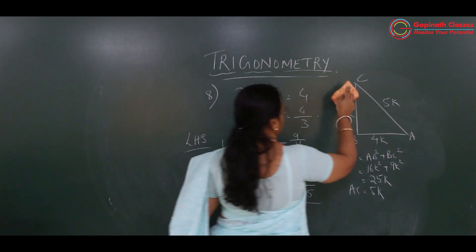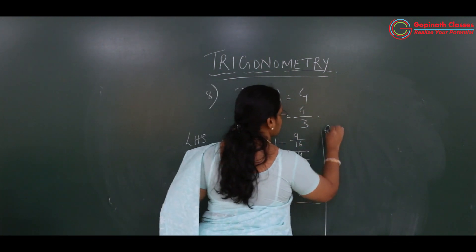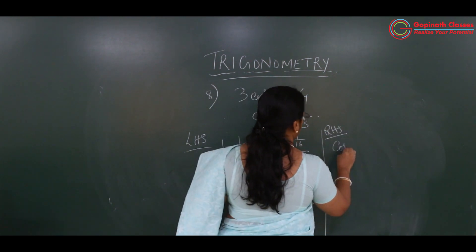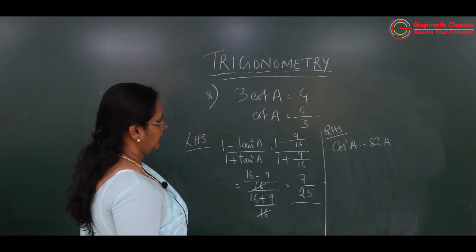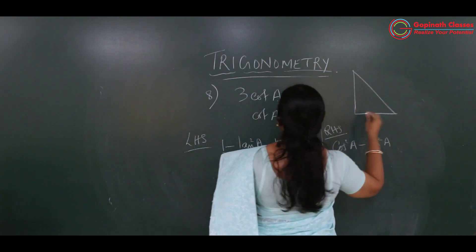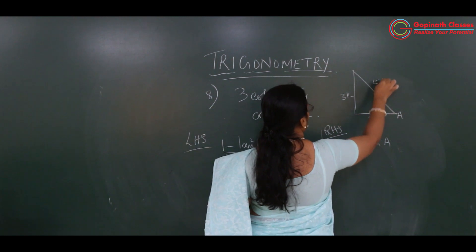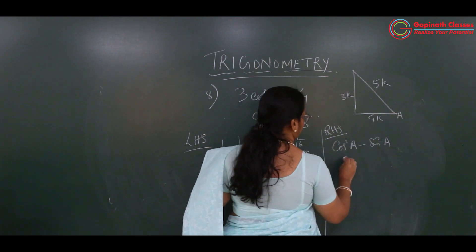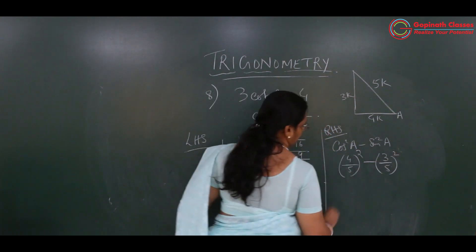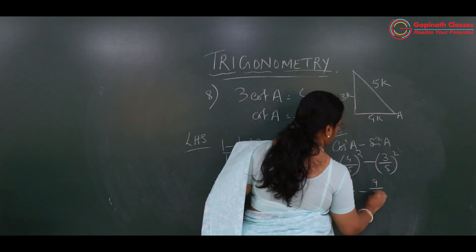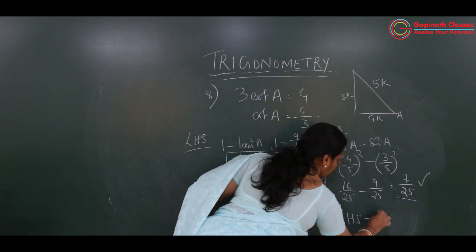Now let's check RHS. RHS is cos square A minus sin square A. From the triangle (cot A = 4/3, sides 4k, 3k, 5k), cos A is 4 upon 5 and sin A is 3 upon 5. So cos square A minus sin square A equals (4 upon 5) square minus (3 upon 5) square, which is 16 by 25 minus 9 by 25, equal to 7 upon 25. LHS equals RHS, so it is verified.